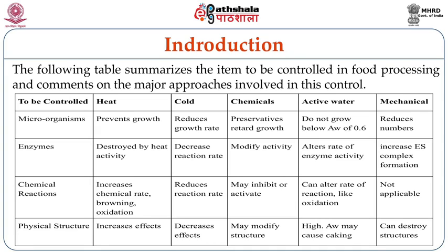The third category is chemical reactions. Heat treatment can increase the chemical reaction rate, and we can also have control on browning reactions or browning oxidations with heat treatment. Cold treatment reduces the rate of chemical reactions in the food matrix. By using chemical preservatives, we can inhibit or activate chemical reactions. By controlling water activity, we can alter the rate of reactions, especially oxidation reactions. By mechanical methods of processing, we cannot change or alter any kind of chemical reactions.